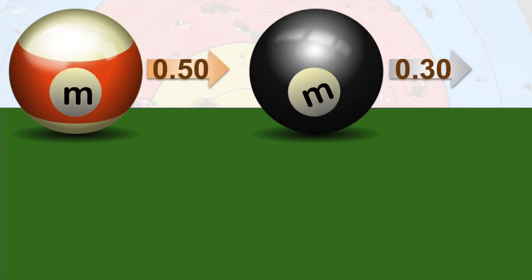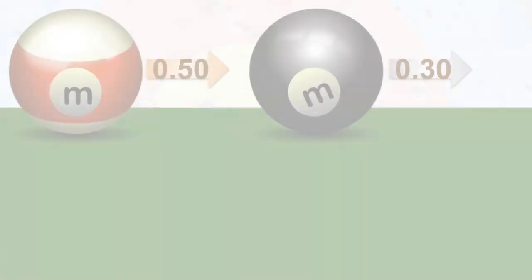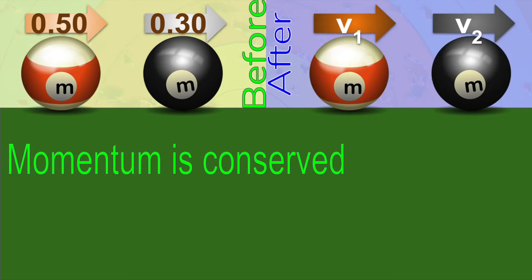Here is the problem we'll try to solve. The balls have the same masses, and you will see that this means we don't have to know the actual value. We can just write M because it will cancel. The orange ball has a speed of 0.5 meters per second, and the black one is traveling more slowly at 0.3 meters per second.